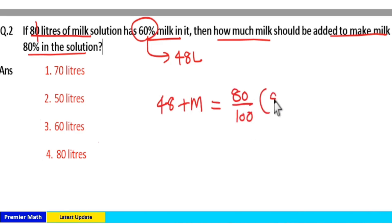Solution means initially 80 liters was present. Now when you add M liters, solution will become 80 plus M liters. Now 48 plus M liters of milk is equal to 80 percentage of the solution.